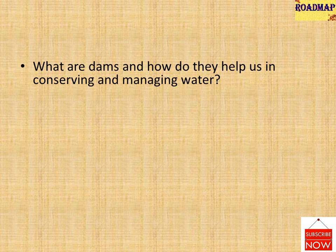What are dams and how do they help us in conserving and managing water? Dams were traditionally built to impound rivers and store water that could be used later to irrigate agricultural fields. Today, dams are built not just for irrigation but also for electricity generation, water supply for domestic and industrial uses, flood control, recreation, inland navigation, and fish breeding. Dams are now referred to as multi-purpose projects. For example, in the Sutlej-Beas river basin, the Bhakra Nangal project water is used both for hydel power production and irrigation. The Hirakud project in the Mahanadi basin integrates conservation of water with flood control.